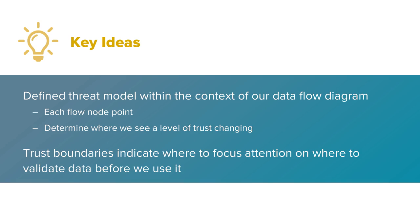We've also talked about where we would use this in a threat model. Specifically, when we have our data flow diagram, that's when we want to look at each data flow node point and determine where we see a level of trust changing. More specifically, trust boundaries tell us where to focus our attention and where we want to concentrate on validating our data before we use it.